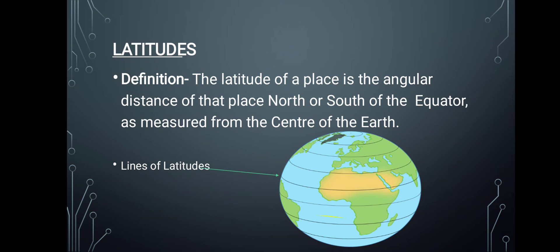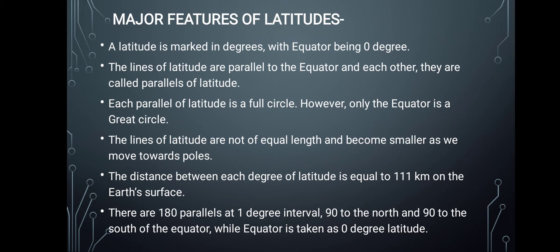Now let's look at the features of latitude. Latitude is marked in degrees, with the equator being zero degrees. From the equator, going north into the Northern Hemisphere or south into the Southern Hemisphere, we reach up to 90 degrees. The lines of latitude are parallel to the equator.